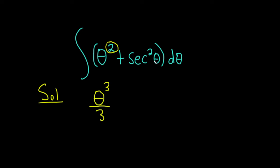For secant squared, we ask ourselves: what function has a derivative of secant squared? Well, the derivative of tangent is secant squared. Therefore, the integral of secant squared is the tangent function.